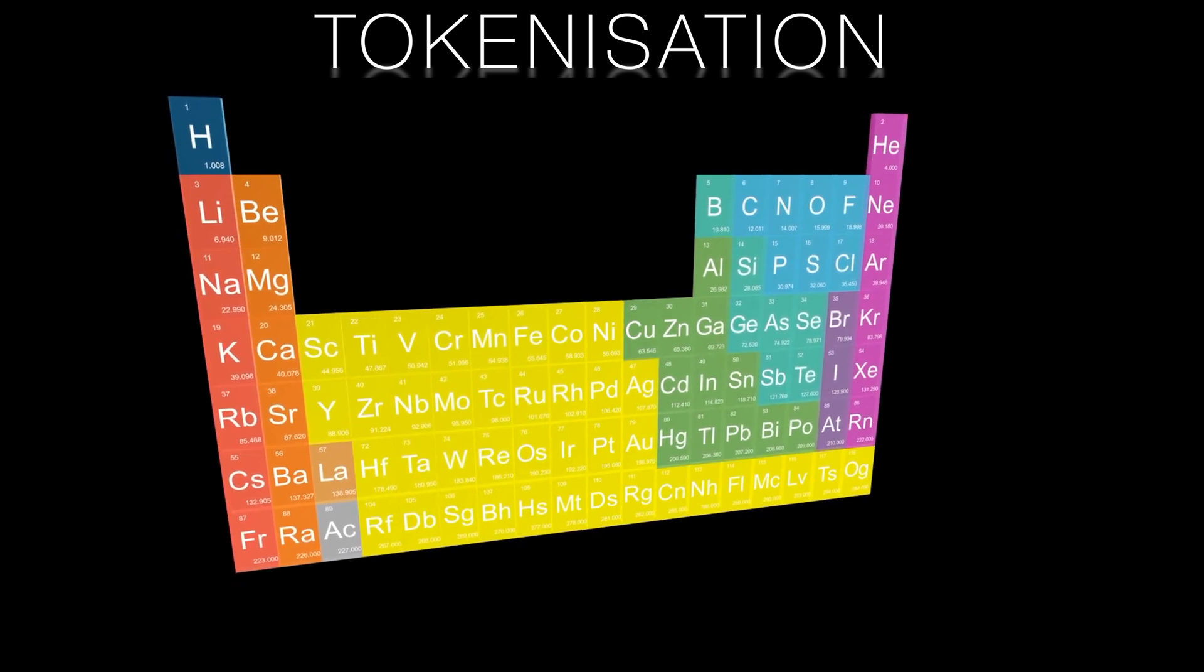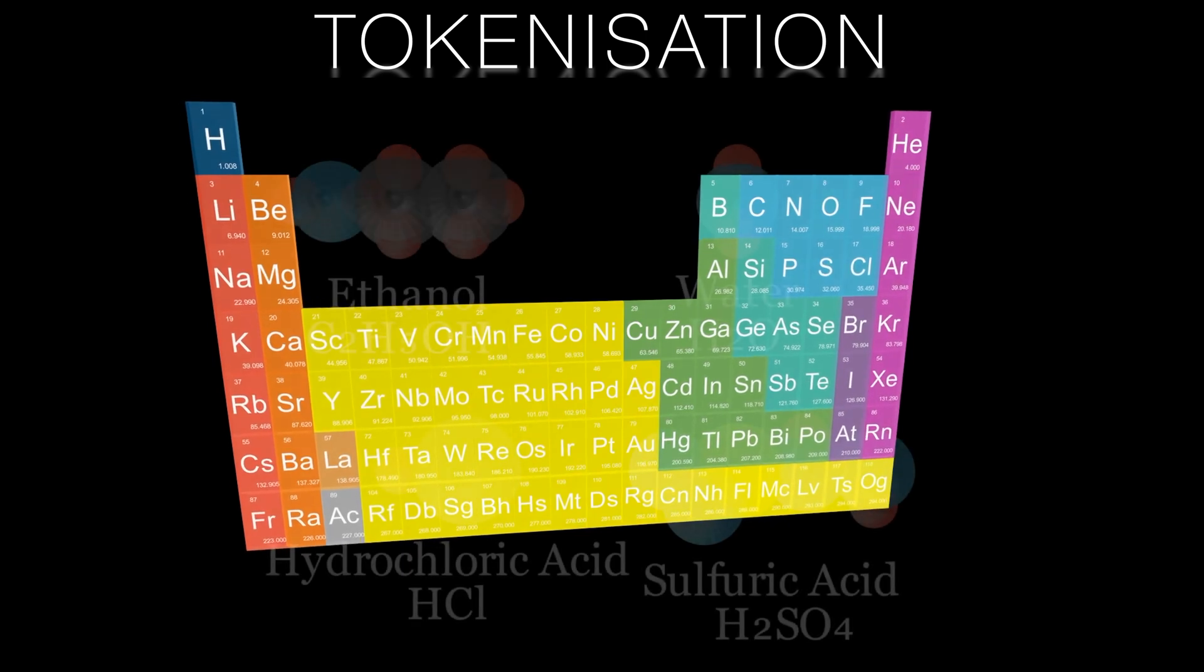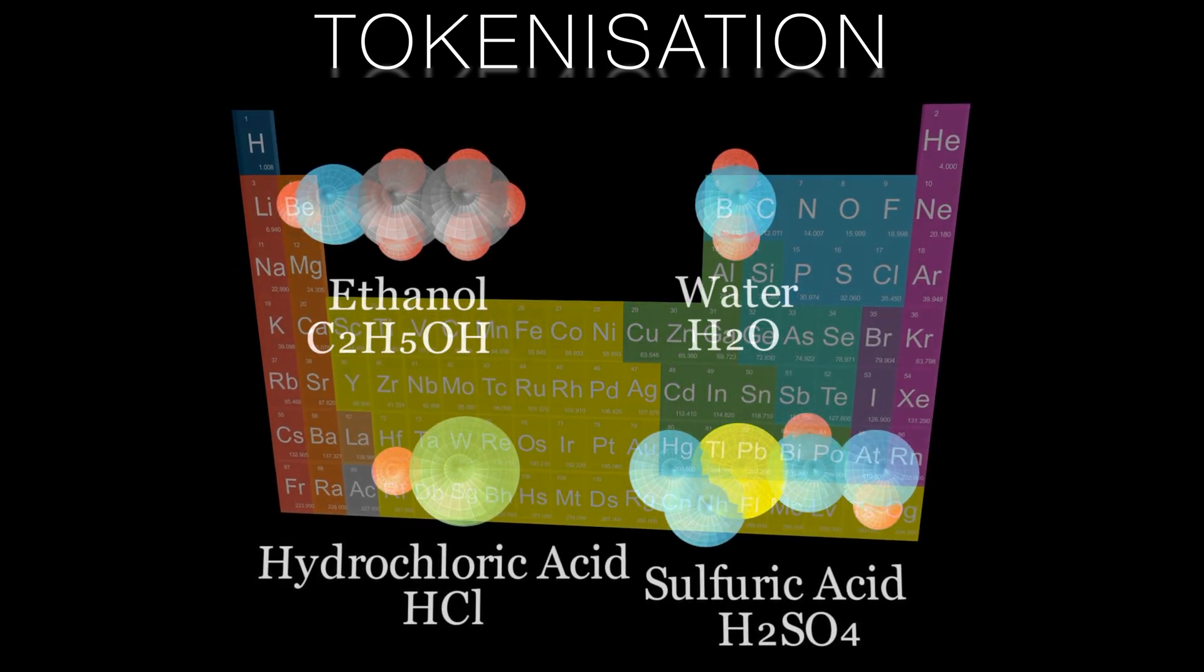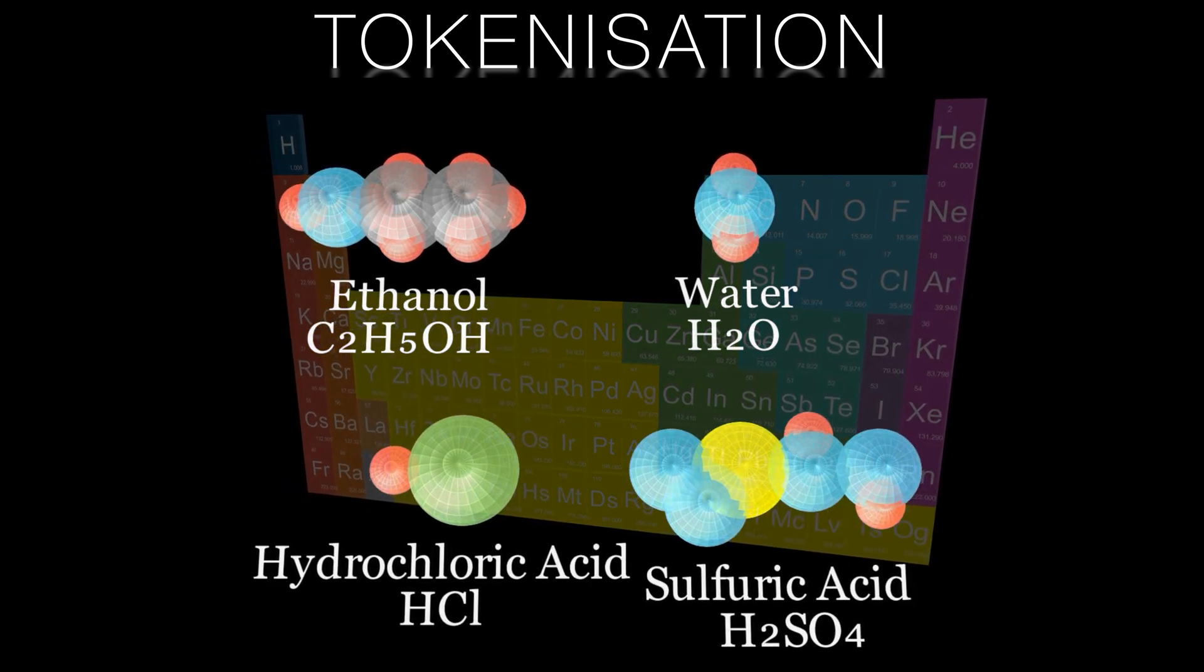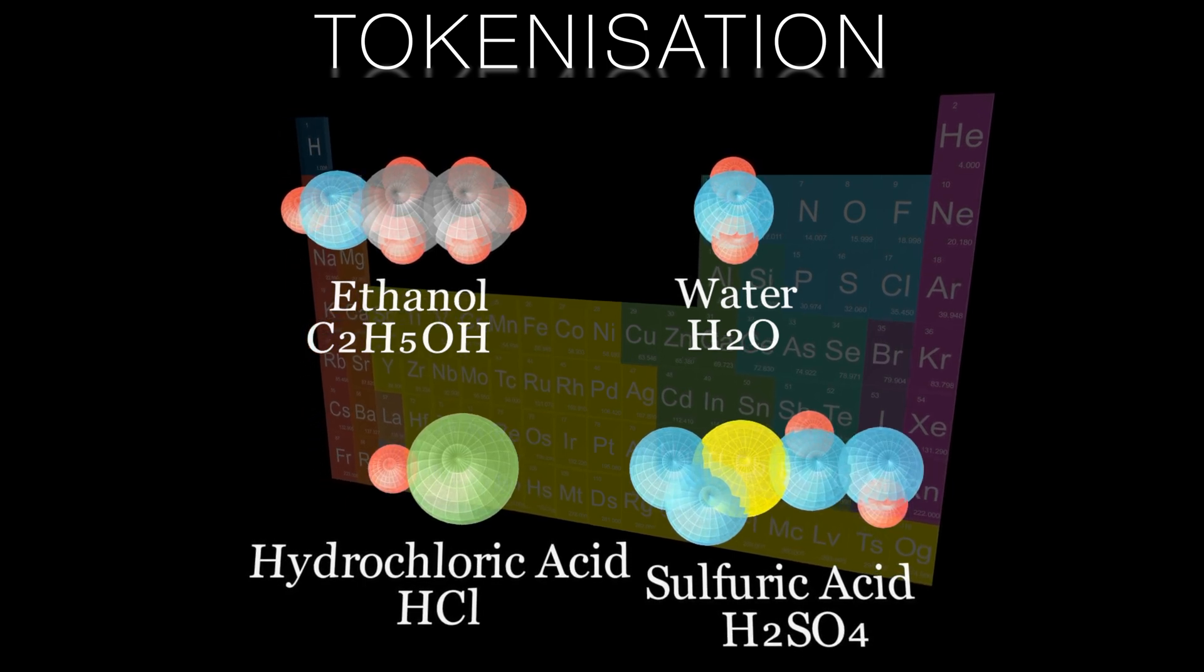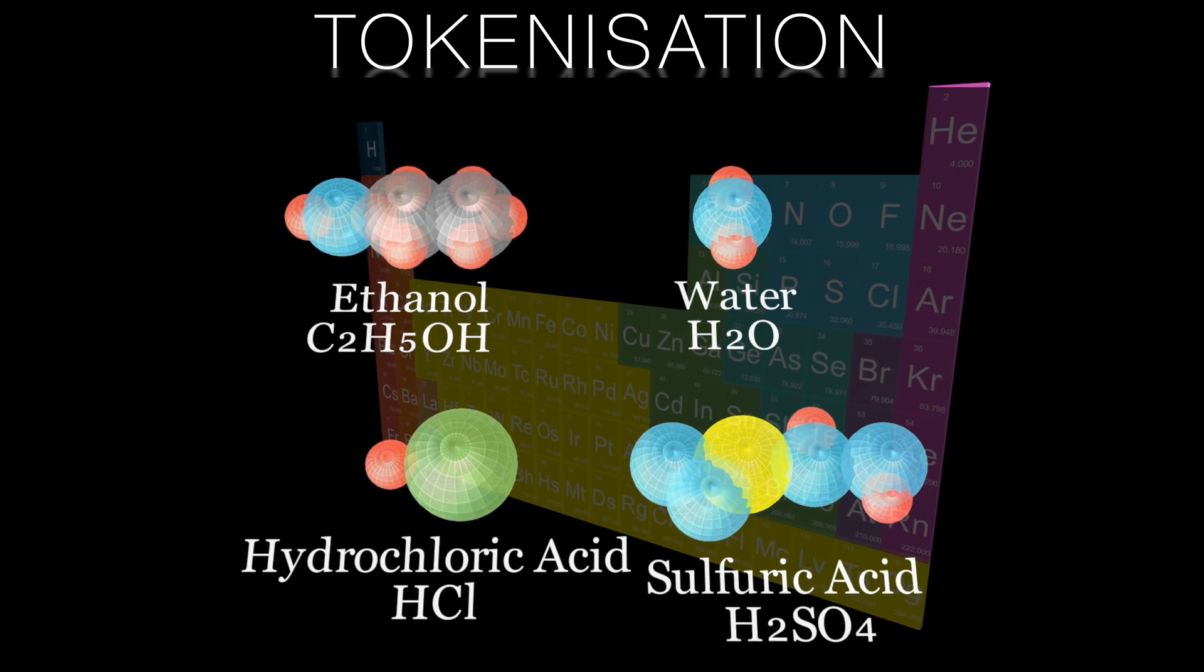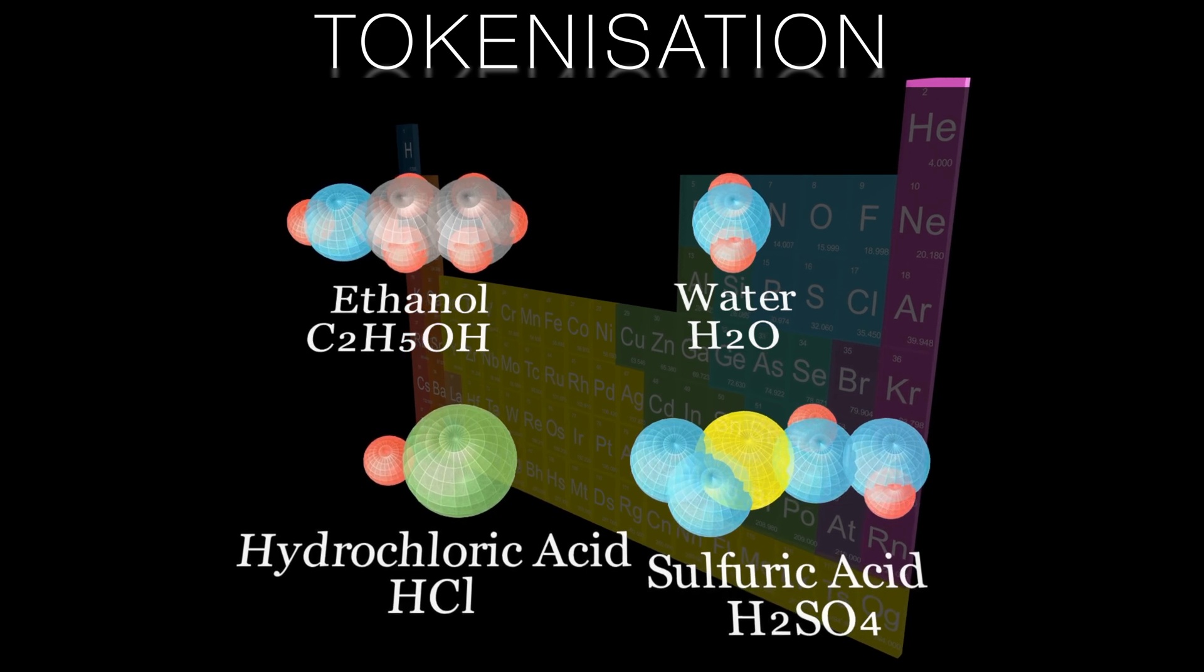If words are like molecules, then tokens are like atoms. Just as a vast variety of molecules and compounds can be created from a limited set of atoms, an immense array of meanings can be conveyed through clever combination of a finite number of tokens. This is especially important for dealing with out of vocabulary words. Tokenization allows us to break down and understand new or unfamiliar words by analyzing their constituent tokens, similar to understanding the properties of a molecule by examining its atoms.